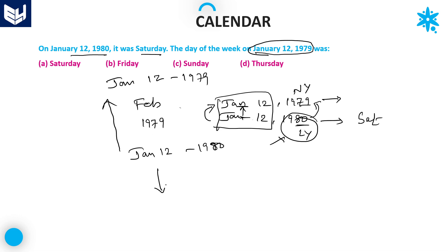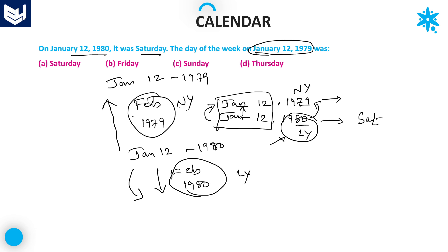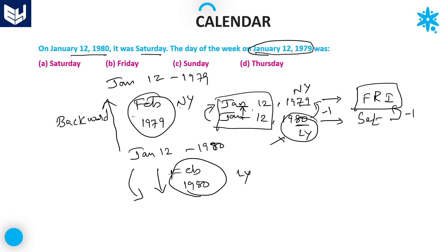In between, going backward from January 12, 1980, you will encounter February month in the year 1979. Since 1979 is a normal year, there is only one odd day. But as you are going backward, you need to subtract one. From Saturday, going back one day is Friday. So January 12, 1979 was Friday. Option B is the right answer.